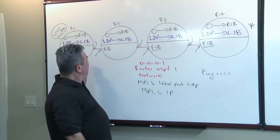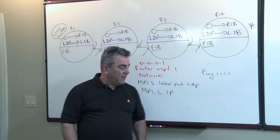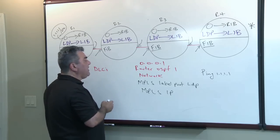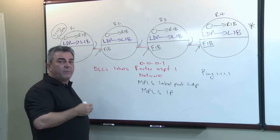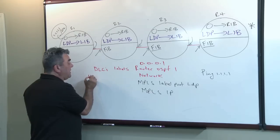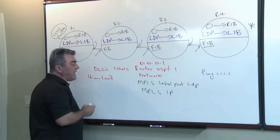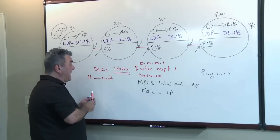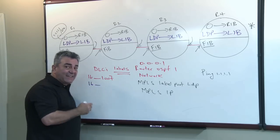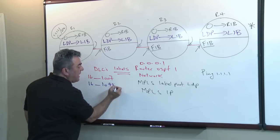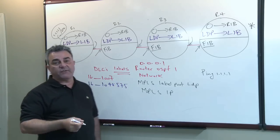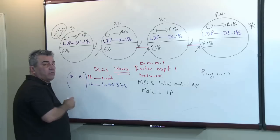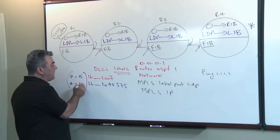In some ways, LDP reminds me of old frame relay. In frame relay, we used DLCIs; in LDP, we use labels. In frame relay, the first usable DLCI was 16 and the last usable DLCI was 1007 using Cisco LMIs. In LDP, the first usable label is 16 and the last usable label is 1,048,575 — basically 2 to the power of 20 minus 1, minus 15. Just like frame relay where DLCIs 0–15 were reserved, in LDP, labels 0–15 are reserved.